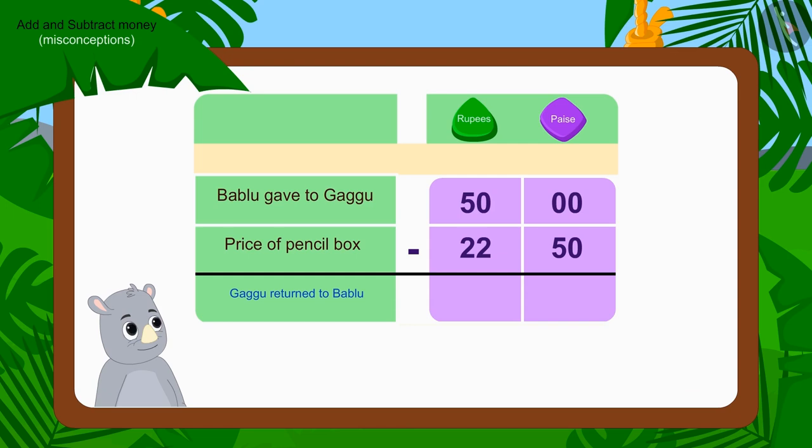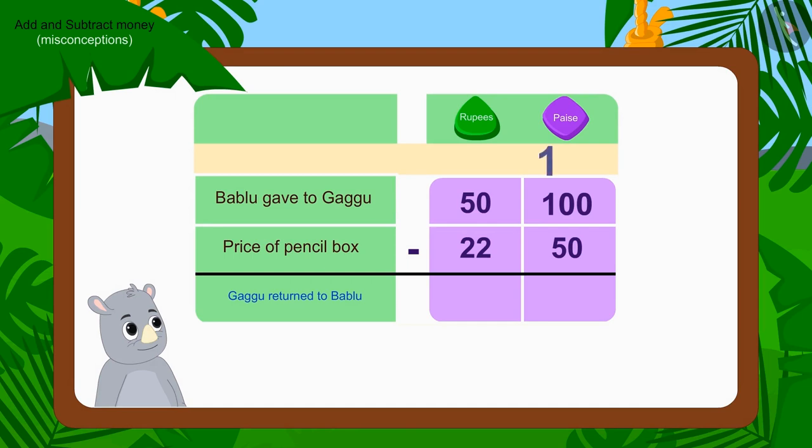Alright! Now we will use the borrowing process. We will borrow one rupee out of fifty rupees. And in this way, we will write it as hundred paise. And since we have borrowed one rupee, what do we have to do? Yes! We have to cut fifty rupees and write forty-nine rupees.